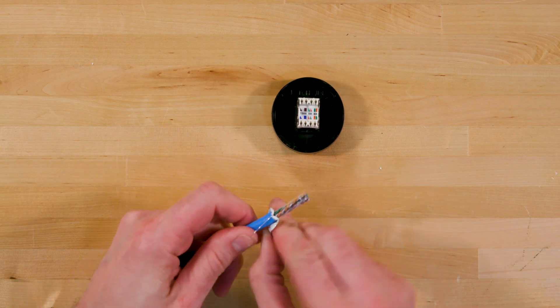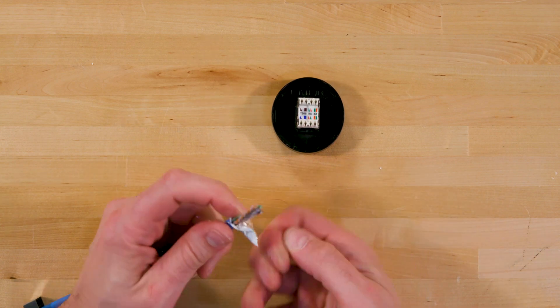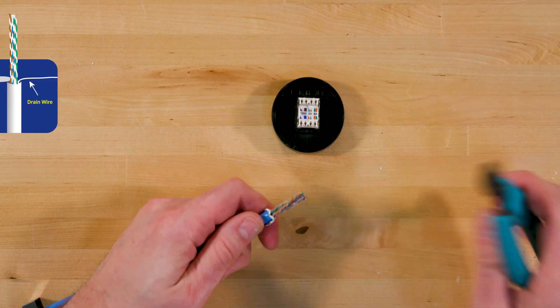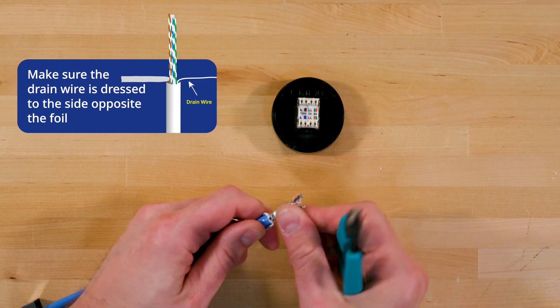Unwrap the foil from around the conductors. Fold it in half with the conductive side facing out and dress it to the side. Make sure the drain wire is dressed to the side opposite the foil.